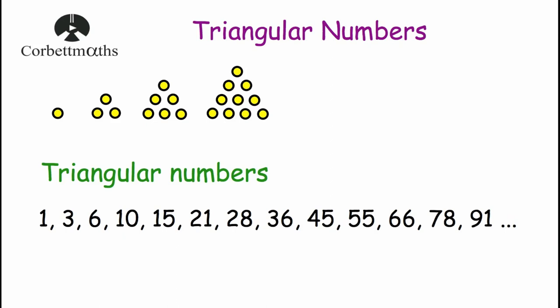So let's have a look at the list of triangular numbers. The first triangular number is one, and then if you add two you get three; add three, you get six; add four, you get ten; add five, fifteen; add six, twenty-one; add seven, twenty-eight; add eight, thirty-six; add nine, forty-five; add ten to get fifty-five; add eleven to get sixty-six; add twelve to get seventy-eight; add thirteen to get ninety-one, and so on.